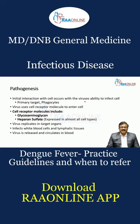Heparin sulfate is expressed in almost all cell types. The virus replicates in the target cells and organs, infects the white blood cells and lymphatic tissues. The virus is then released and circulates in the blood.